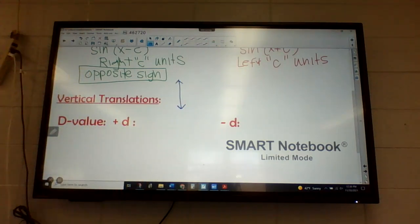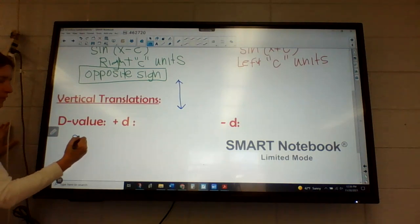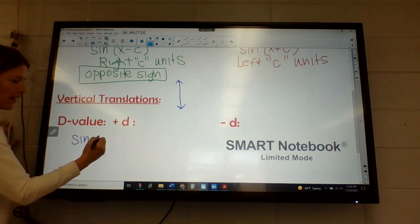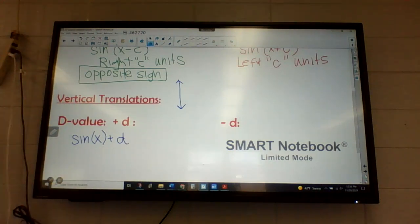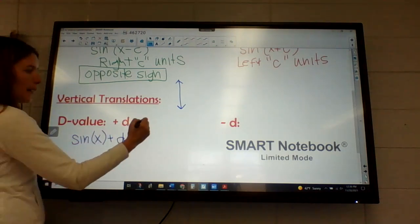Okay, so guys, our vertical translation now is when it's outside the parenthesis. So again, kind of just referring back to our sine of x, but then you're adding that value outside the parenthesis. So this would shift it up.